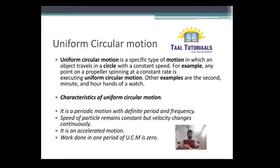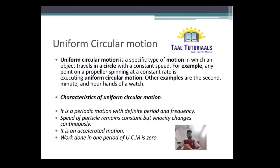What are the characteristics of uniform circular motion? It is a periodic motion with definite period and frequency. Speed of the particle always remains constant but velocity can change continuously. It is an accelerated motion, and work done in uniform circular motion will always be 0, because displacement is 0, so work automatically becomes 0. This is the end of the topic for this presentation.